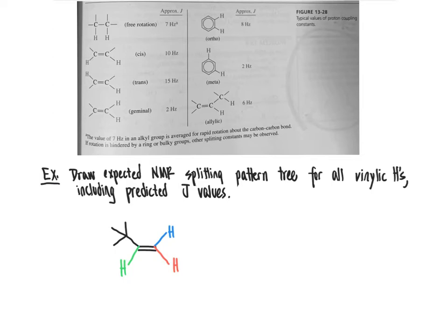Even though the red and blue protons are attached to the same carbon, they are in a very different chemical environment because the double bond locks those atoms into place — they can't freely rotate. So these two, the red and the blue, are non-equivalent and would have their own individual proton chemical shifts.